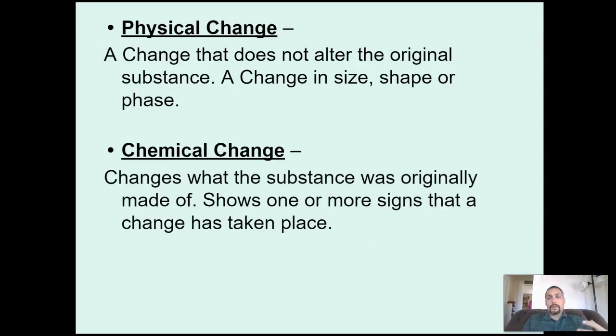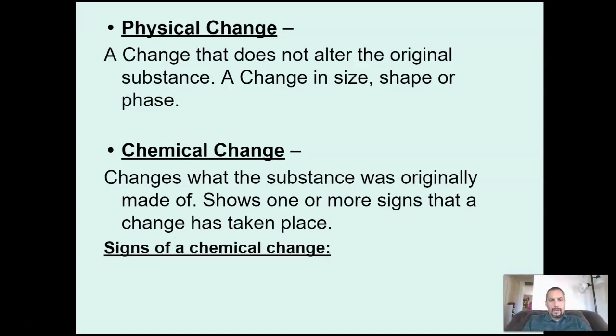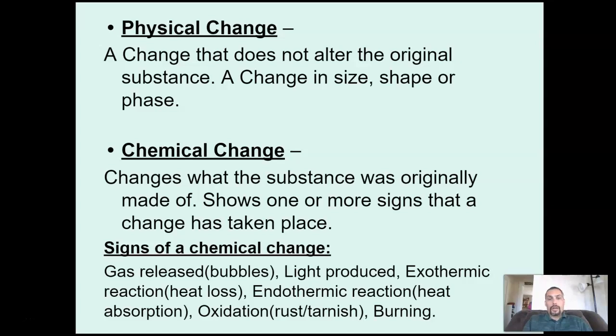Chemical change - here we are changing the makeup of the molecules that make up that substance. We're taking our water and we're breaking it apart so it becomes hydrogen and oxygen, or we are taking our metal and reacting it with acid so that it is no longer a metal, it's now some other material. When we have a chemical change take place, there are usually some sort of signs that tell us the chemical change has taken place.